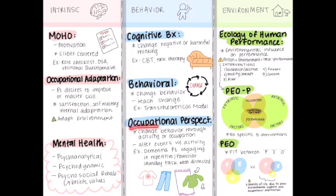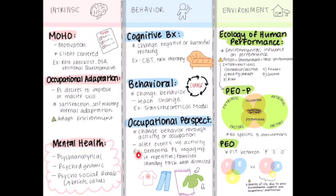Moving on to the occupational perspective model. This model talks about changing behavior through activity or occupation — this is so OT. You can alter events with activity. The example I thought of was if you had a dementia patient who was upset or irritated, you might give them an occupation or a task to change the situation, but more specifically change their behavior — help them de-escalate with a really repetitive or familiar task such as laundry.